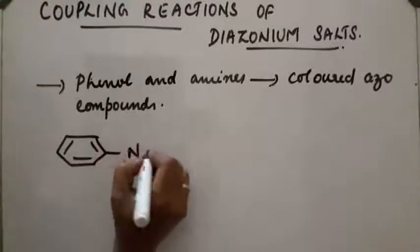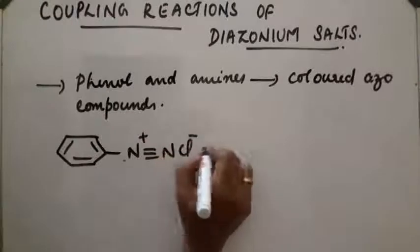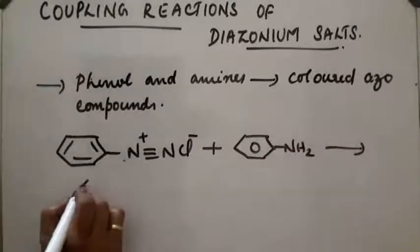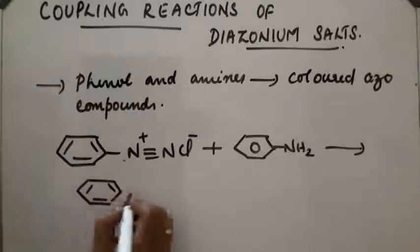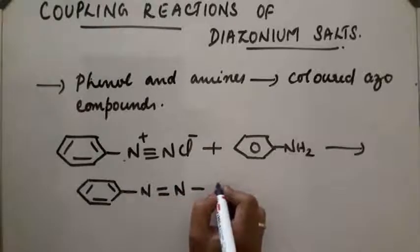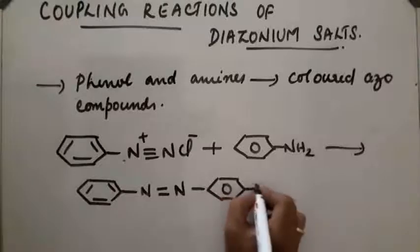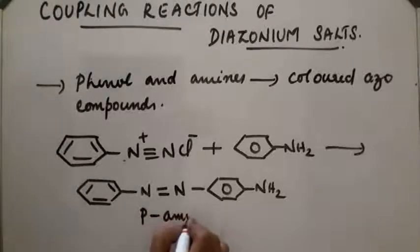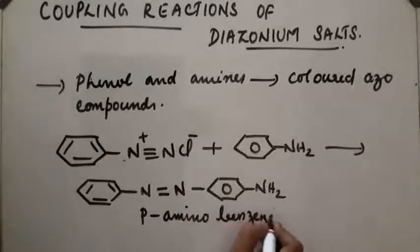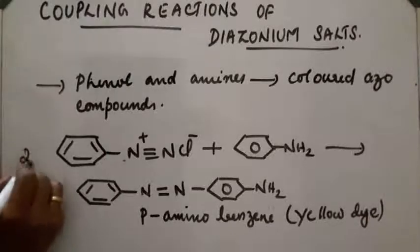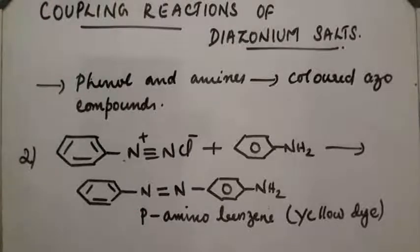Second reaction: diazonium chloride on reaction with aniline (NH₂) gives para-aminoazobenzene. Para-aminoazobenzene is obtained, which is a yellow azo dye. So in the second reaction, diazonium salt reacts with aniline to give para-aminoazobenzene, which is a yellow azo dye.